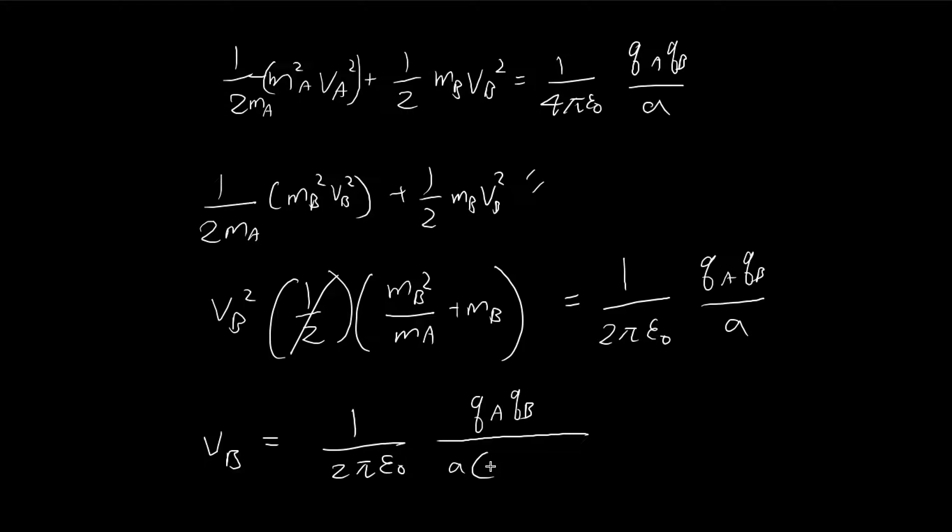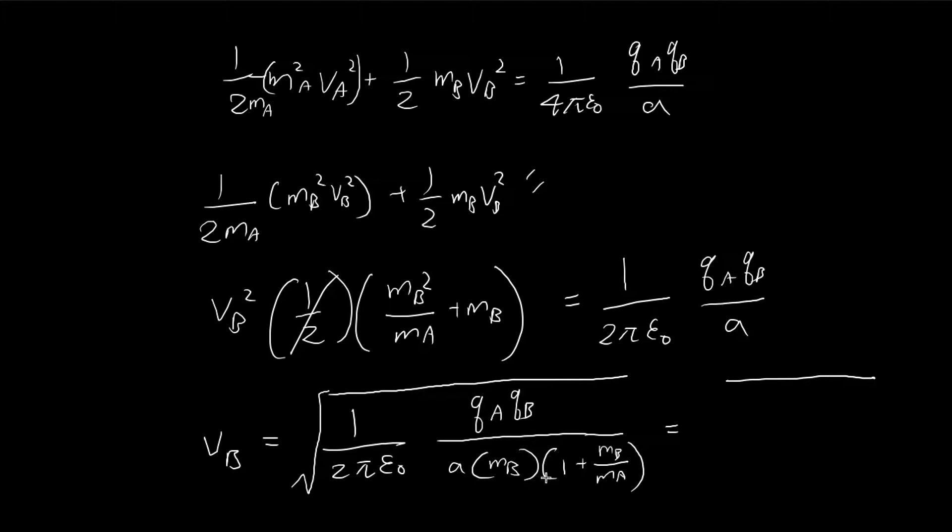And then for this expression here, I'm going to pull out the Mb. So we have 1 plus Mb divided by Ma, and then that's going to be the square root. I can actually rearrange this a little bit to make it look better. Let's open a new page. So Vb is equal to square root 2 pi epsilon qA qB. In the denominator, I can actually multiply Ma inside. So I'm going to multiply this whole thing by Ma divided by Ma. I can multiply the Ma inside this bracket, so this becomes Ma and this goes away.